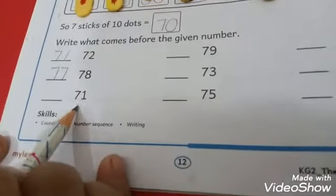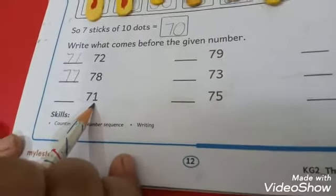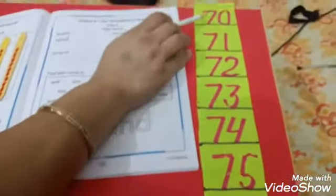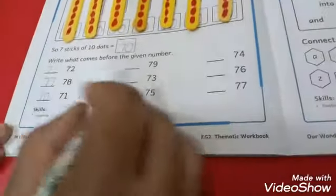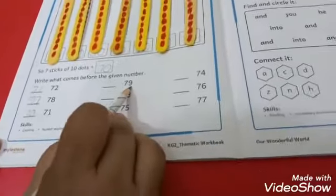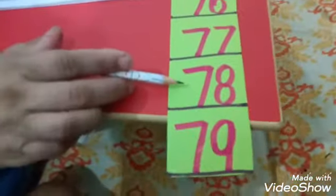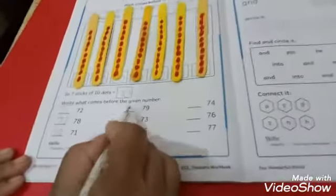Now next number is 71. So which number comes before 71? It's 70. Next number is 79. Which number comes before 79? It's 78. We will write here 78.